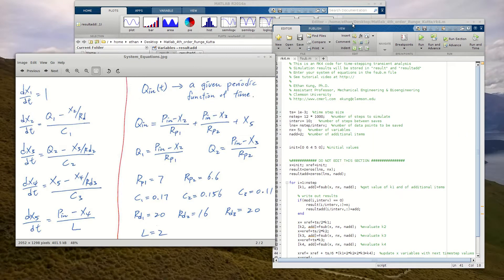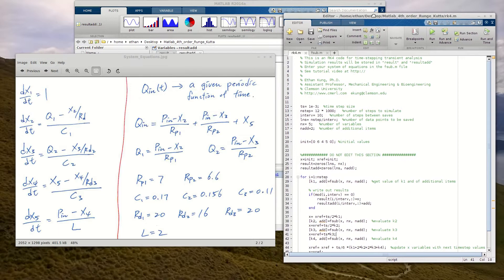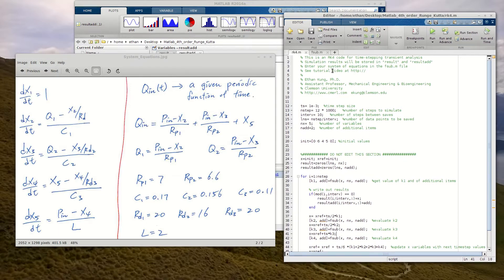Okay, so now let's see how we implement these equations into this MATLAB code. There are two files in the MATLAB code. One is called rk4.m, and the other one is called fsub.